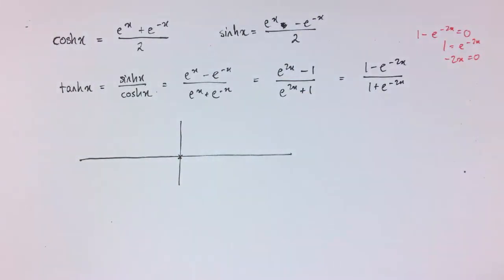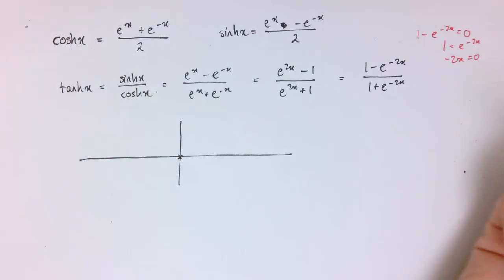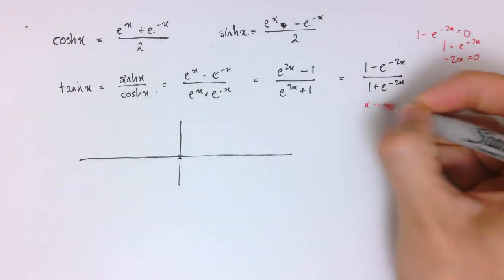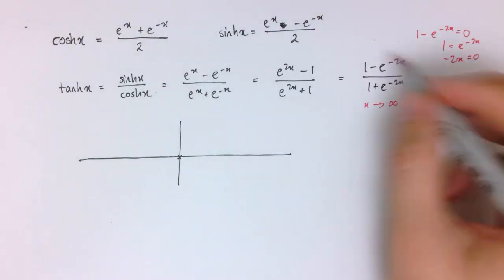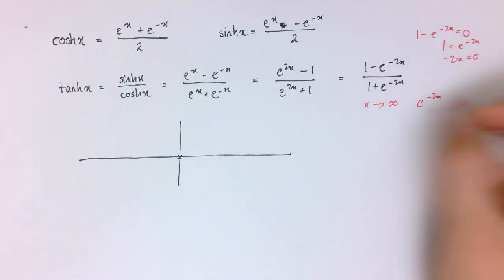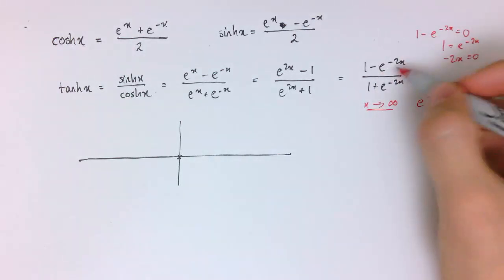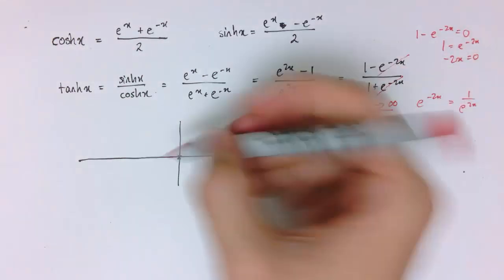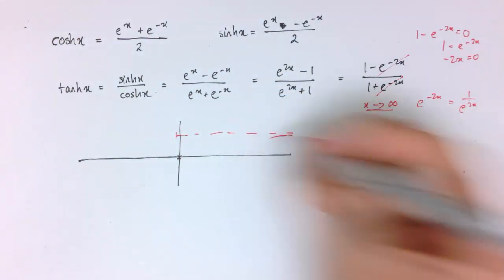Now if we look at what happens when x gets very large or very small, let's say what happens when x tends to infinity. E to the minus 2x for a very large value of x, that's the same as 1 over e to the 2x, so this is going to go to 0. When x goes to plus infinity, this term goes to 0 and this term goes to 0, so it asymptotes at plus 1.